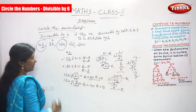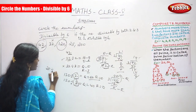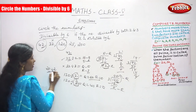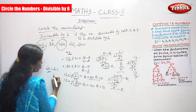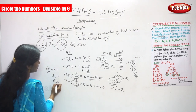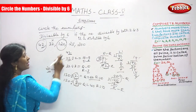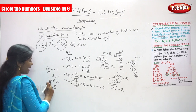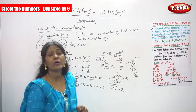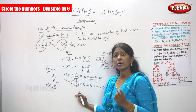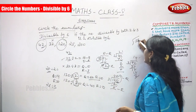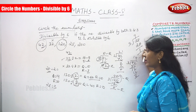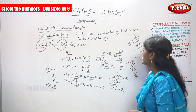Next is 28. It ends with 8, an even number, so it is divisible by 2 — quotient 14, remainder 0. Now, is 28 divisible by 3? 9 × 3 = 27 and the remainder is 1. Since the remainder is not 0, 28 is not divisible by 3.